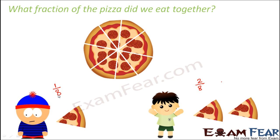So Rohan ate 2/8, Amit ate 1/8. But in order to find out how much did they eat together we actually need to add 2/8 and 1/8. So in this section we are going to learn about addition and subtraction of fractions.